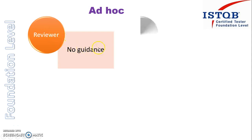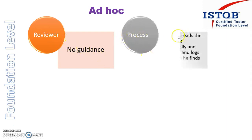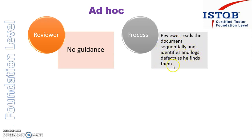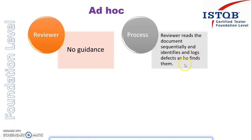So what the reviewer does is he follows a process: the reviewer reads the document sequentially and identifies and logs defects as he finds them. The document is given to him, and he will go through it sequentially, line by line, and whenever he finds a defect, he will log it at that particular time.